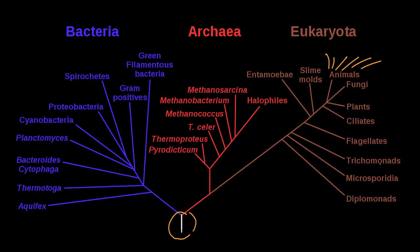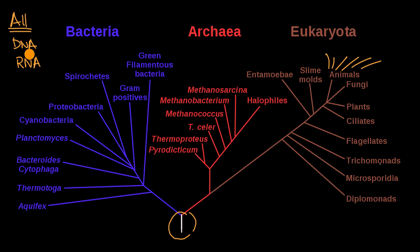For example, all life forms that we know of have DNA. They all have RNA, and it isn't just how they encode information — it's also processes, biochemical processes, that occur in the cells. They all have some form of glycolysis.